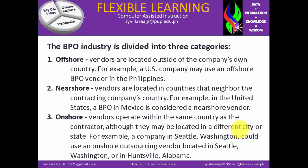The BPO industry is divided into three categories. The first one is offshore, where vendors are located outside of the company's own country. For example, a U.S. company may use an offshore BPO vendor in the Philippines. The second one is nearshore, where vendors are located in countries that neighbor the contracting company's country. For example, in the United States, a BPO in Mexico is considered a nearshore vendor. The third one is onshore, where vendors operate within the same country as the contractor, although they may be located in a different city or state. For example, a company in Seattle, Washington could use an onshore outsourcing vendor located in Seattle, Washington also, or in Huntsville, Alabama.